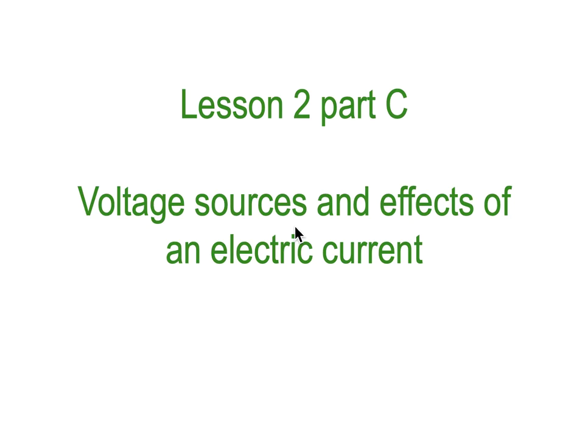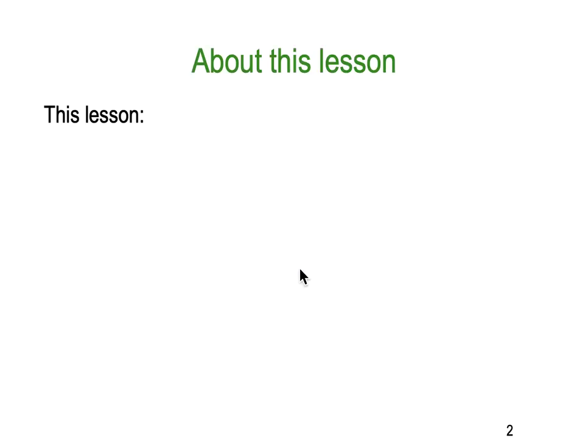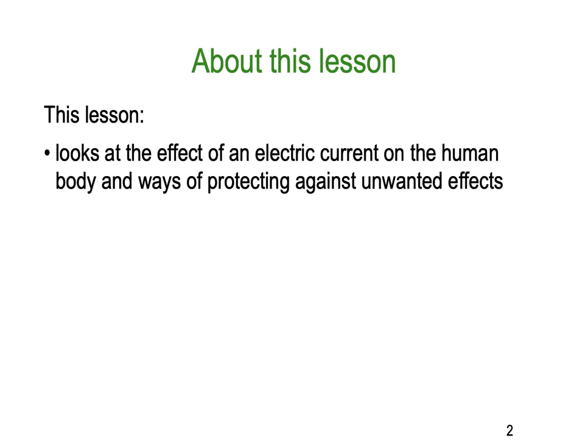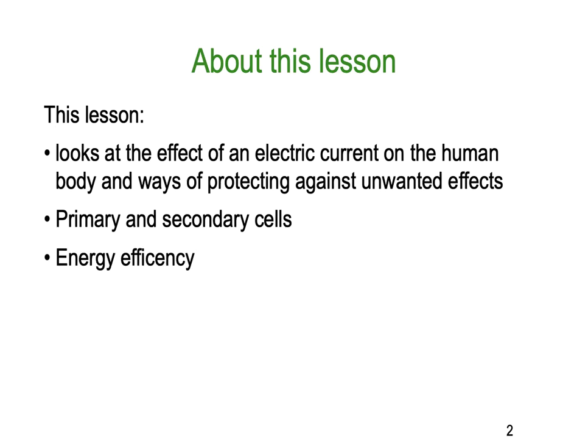Hi, it's Dr. Ken here again with DC Lesson 2, Part C, looking at voltage sources and their effects of an electric current. In this lesson, we're going to look at the effects of electrical current on the human body in a little bit more detail, and what we can do to protect against unwanted effects. We're going to look at primary and secondary cells, the different forms of energy, conservation of energy, and energy efficiency.